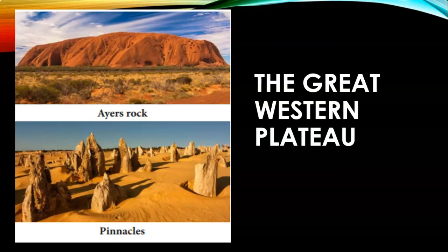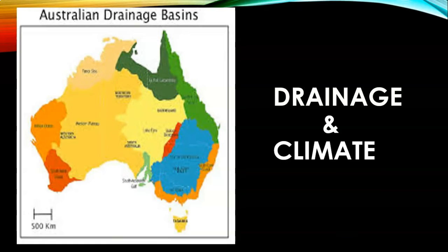The Great Victoria Desert is the largest desert in Australia, located in Western Australia and South Australia. The Central Lowlands extend from the Gulf of Carpentaria in the north to the Indian Ocean in the south. In the centre of these lowlands lies the large inland drainage basin of Australia. Lake Eyre is the largest salt lake in this region. The Murray-Darling River system lies in the southeastern part of the Central Lowlands. Beneath the Central Lowlands, huge artesian basins are found.